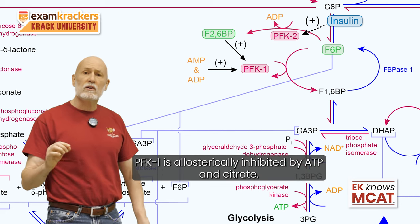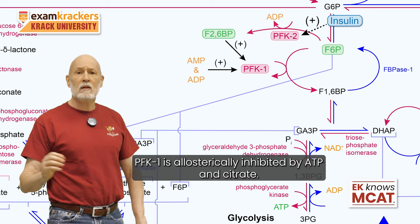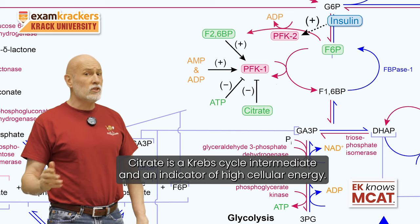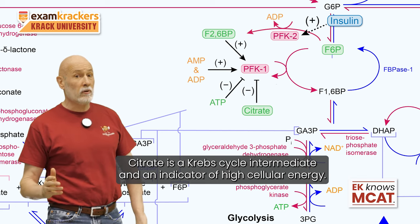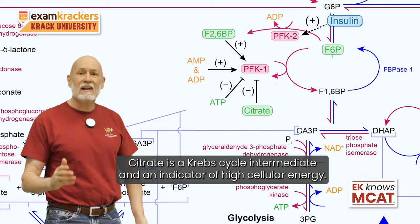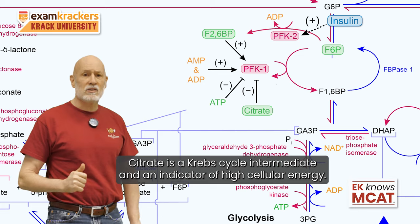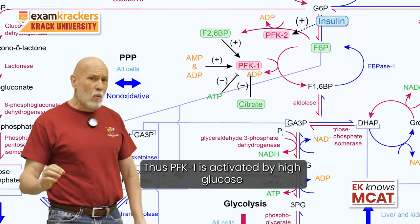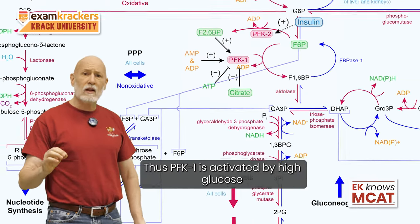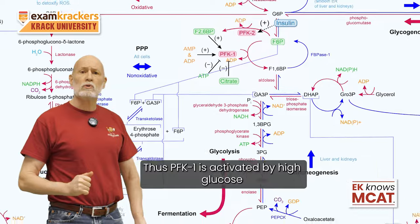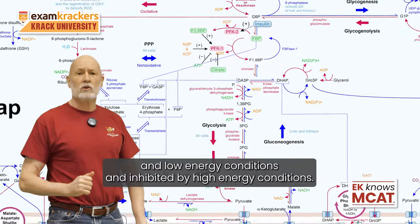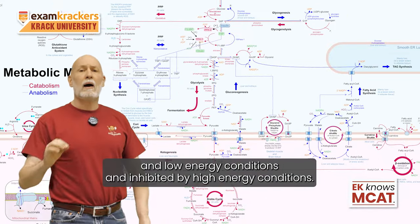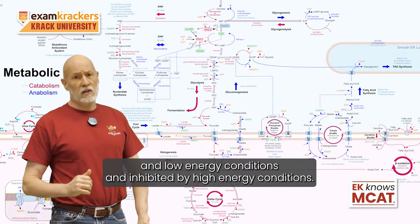PFK1 is allosterically inhibited by ATP and citrate. Citrate is a Krebs cycle intermediate and an indicator of high cellular energy. Thus, PFK1 is activated by high glucose and low energy conditions, and inhibited by high energy conditions.